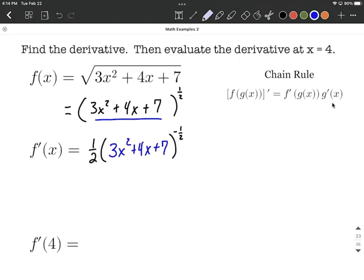Then we want to multiply by the derivative of the inner function for the chain rule. So assuming you understand the power rule, we're going to take the derivative one term at a time. Derivative of 3x squared is 6x to the first power. Bring the exponent down, multiply it by the number in front and reduce it by 1.